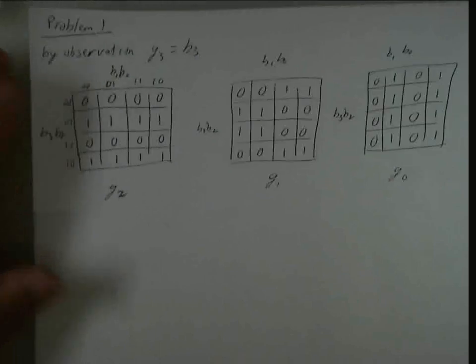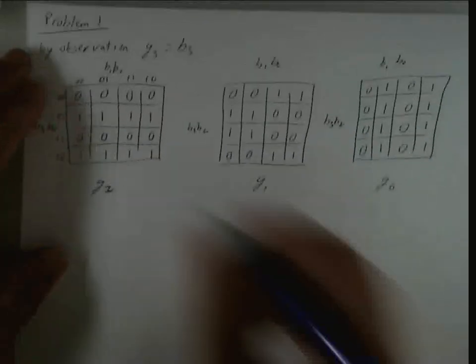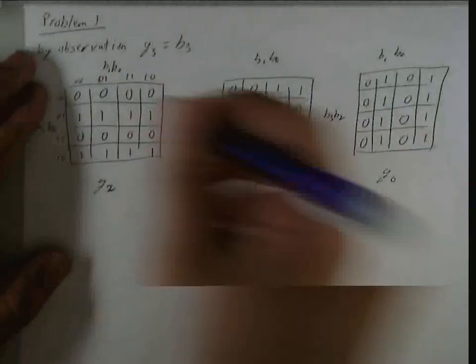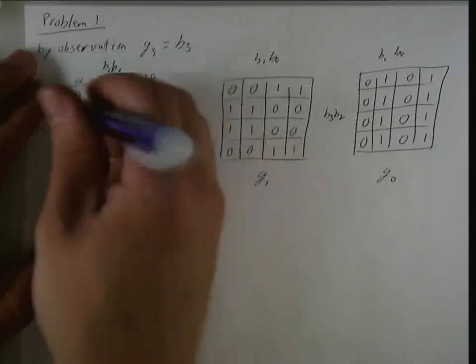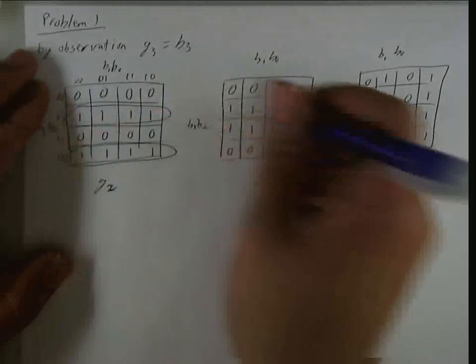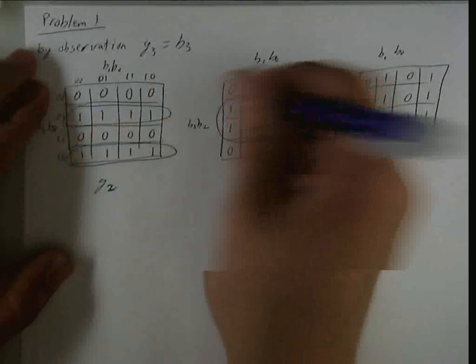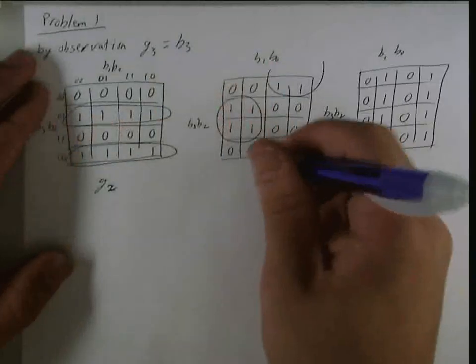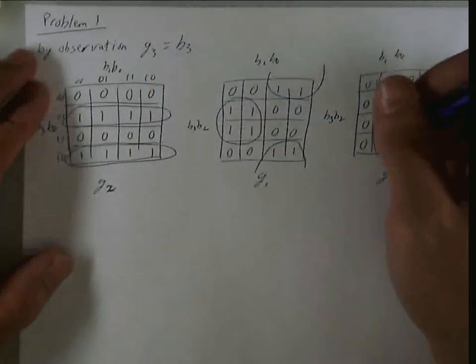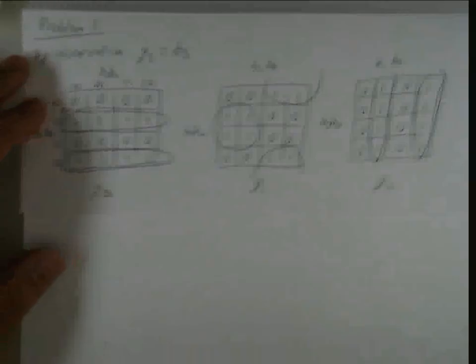So that completes that. Now I've translated these into K-maps. And my prime implicants are really easy. So I've got that one, this set of four, and I've got a loop here. And I've got this, and I've got this.